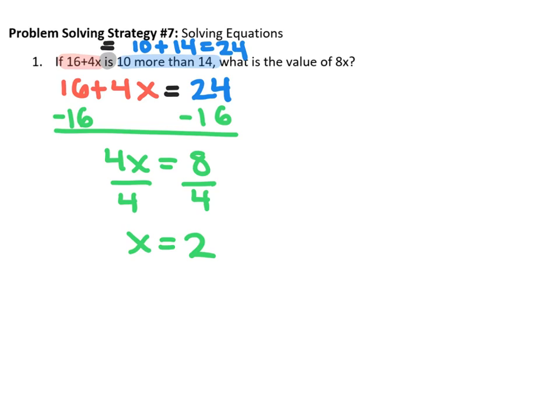So we want to take the x and substitute. So 8x is going to equal 8 times the value of x, which we said was 2, and that gives us 16, which is your final answer.